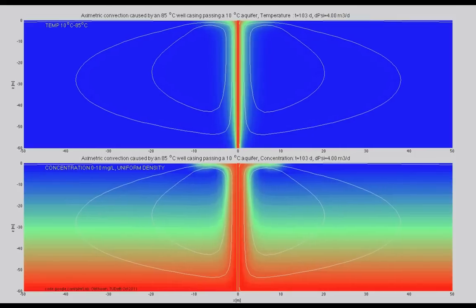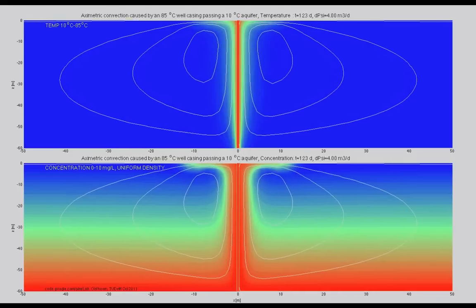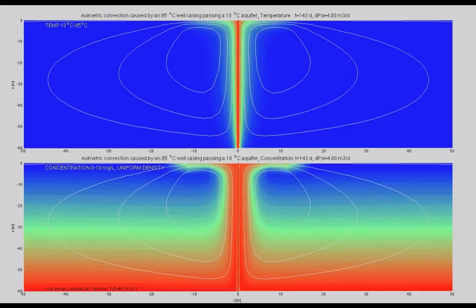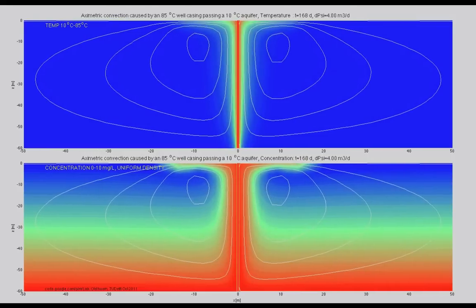The top shows the temperatures between 10 and 85 degrees centigrade and the lower part shows the distribution of some chemical in the aquifer that will be redistributed by convection caused by the hot well casing.